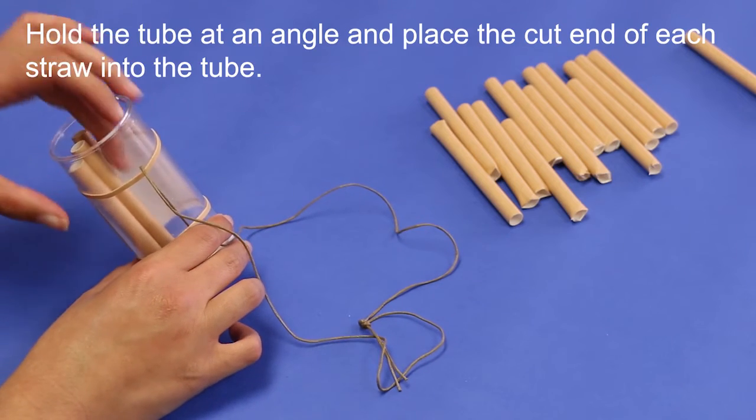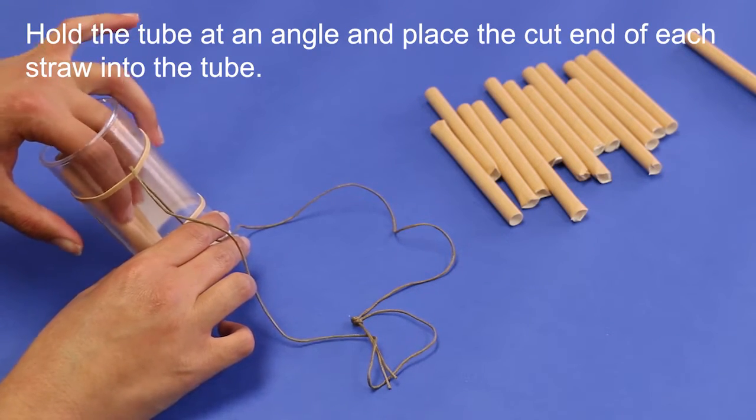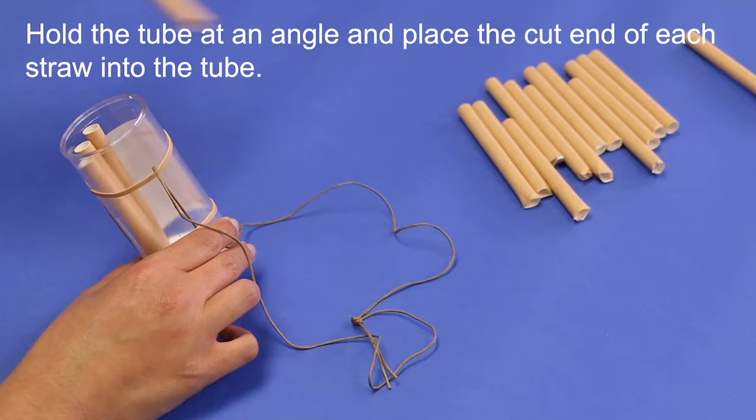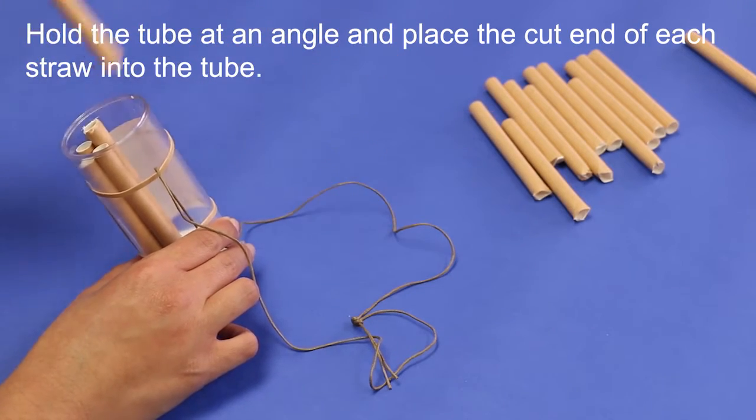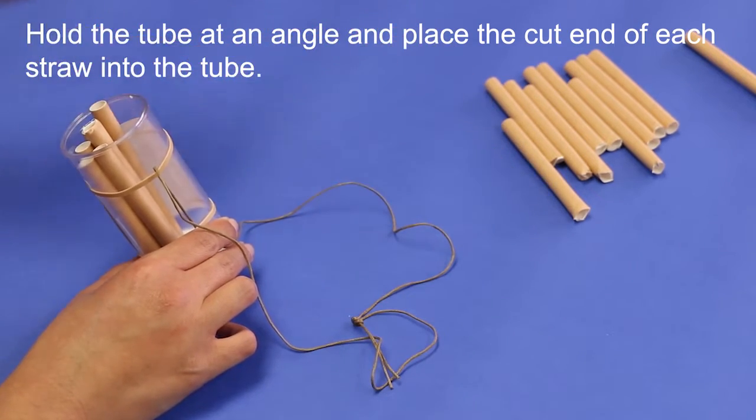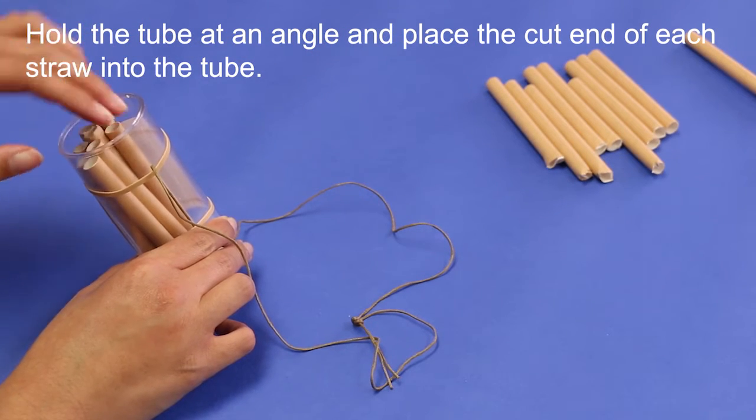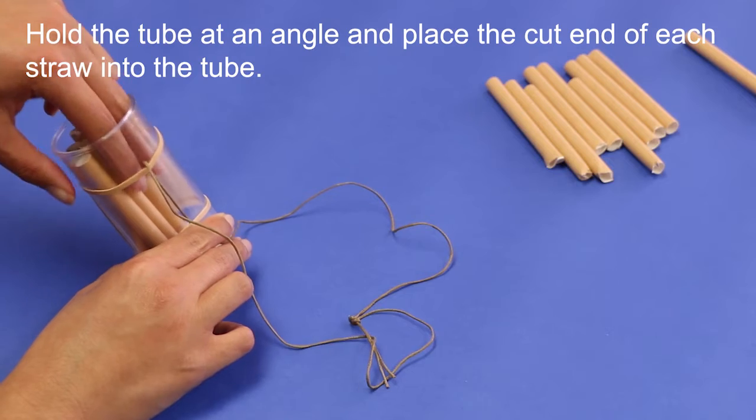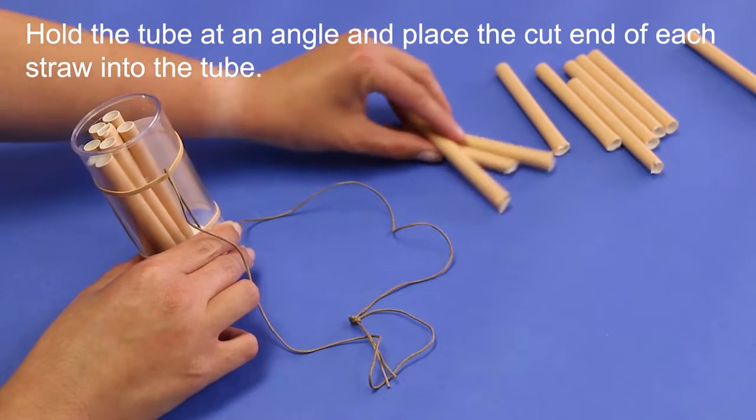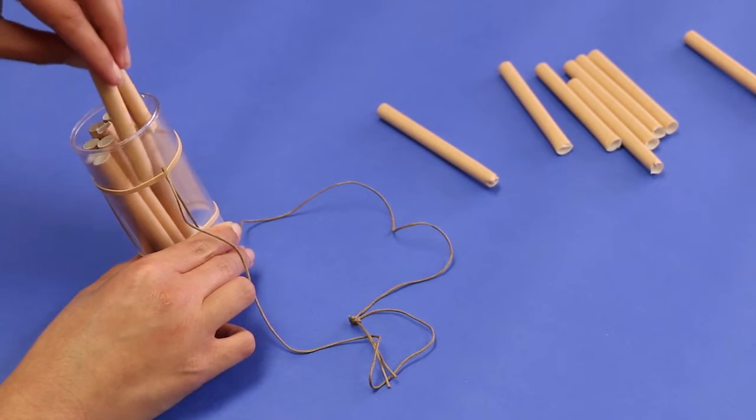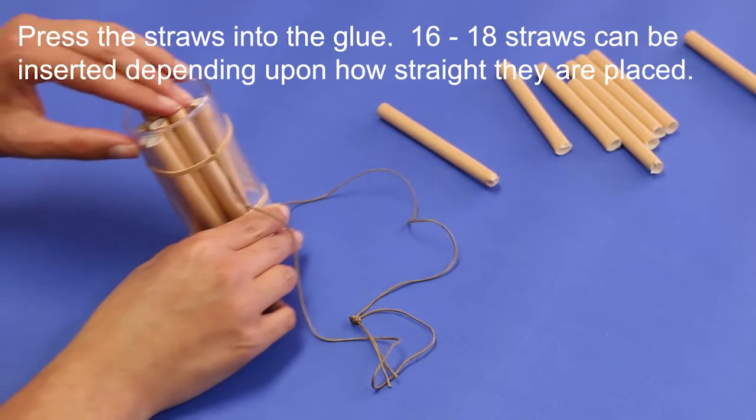The last step is to insert the straws into the tube. While it's not necessary, aesthetically it is most pleasing to have the cut edges go into the bottom of the tube so that they are sitting in the glue. With the tube held at an angle, it's easy to drop the straws in and then be sure to press them down into the glue at the bottom.